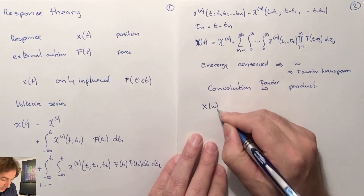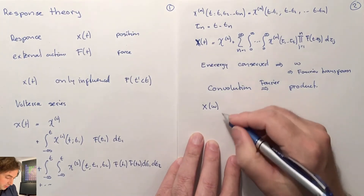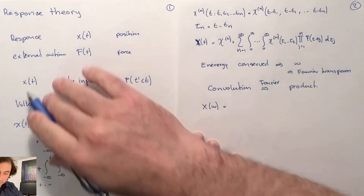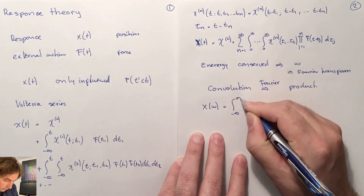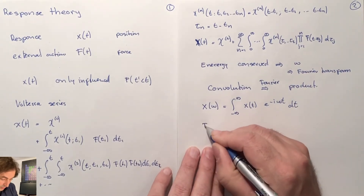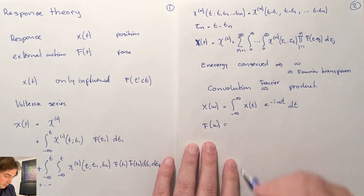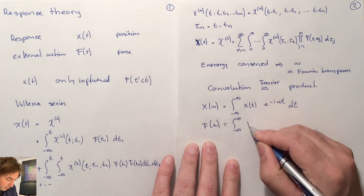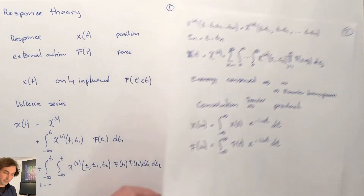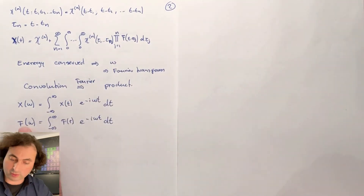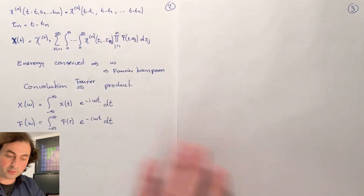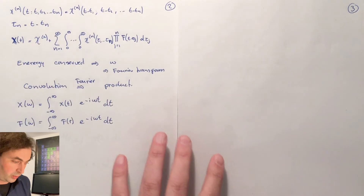Let's define the position as a function of frequency, which is basically the amplitude of that Fourier component in your time-dependent position. This is just the Fourier transform of x(t): the integral of x(t) e^{-iωt} dt. And the same we do for the force — this is the Fourier transform of the time-dependent force that we apply. With these two definitions of the position and the applied force in frequency space, we can now make a Fourier transform of our position as a function of time expressed with the use of response functions.